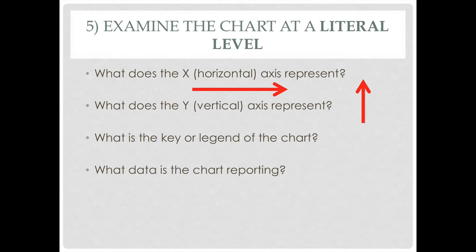Then we need to start plotting out exactly what the chart says. We want to look at the x or horizontal axis first — that's going to be your independent variable, which moves on regardless of influence, and usually represents time. Then we look at the y or vertical axis and what it represents. We also look at any keys, legends, or color coding, and then ask ourselves: what data is the chart actually reporting? At this point, we're not trying to interpret — we're just trying to gather what this chart is saying on a literal level.